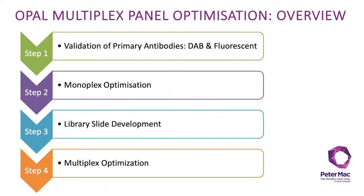The following slide shows an overview of the steps involved in the design, optimization and validation of an Opal multiplex panel. The first step is to validate each of your primary antibodies, first chromogenically and then fluorescently. The next step is to define the proper staining parameters for each of the individual antibodies and Opal pairings, known as monoplex slides. This is usually the most challenging and time-consuming part in the multiplex process. You'll also need to generate library slides, each stained with only a single Opal fluorophore and no DAPI, a DAPI stained slide, and also an autofluorescence slide. These slides will be used to create a spectral unmixing library in inForm. And the last step is optimization of your multiplex slide, where we assess for crosstalk and interference and rebalance and reorder if needed.